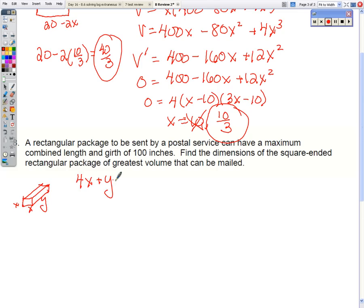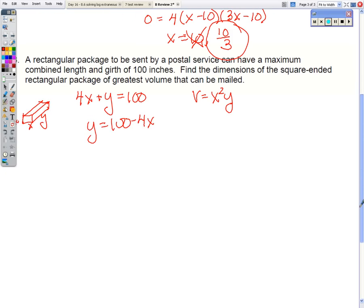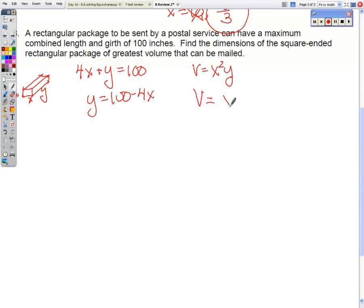The girth is 4x plus the length is 100. The volume is x squared times y. So we're going to solve this equation for y. Substitute it in to the volume. Distribute the x squared.